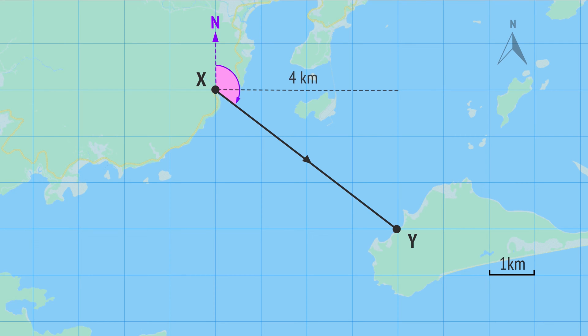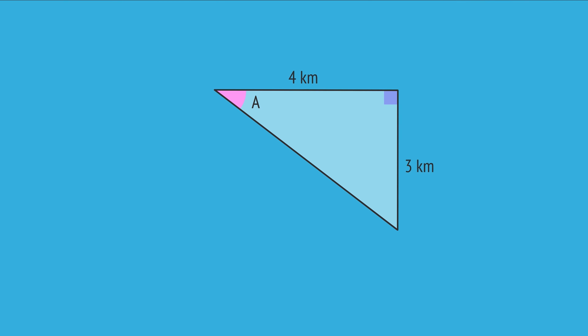We can draw this horizontal line crossing 4 squares, and so 4 kilometres long, and this vertical line crossing 3 squares, and so 3 kilometres long. When we subtract this 90-degree angle from the bearing, we're left with angle A in the triangle. And since we know two of the sides, we can use a trig ratio to calculate this angle A.